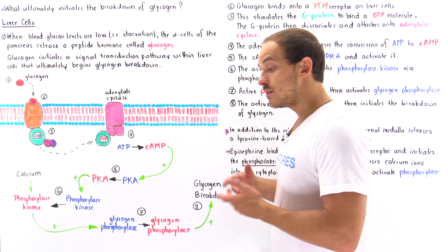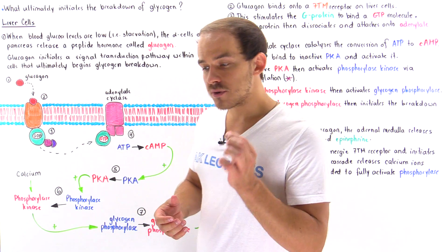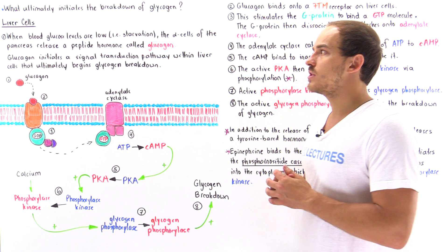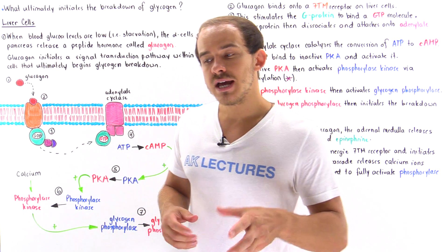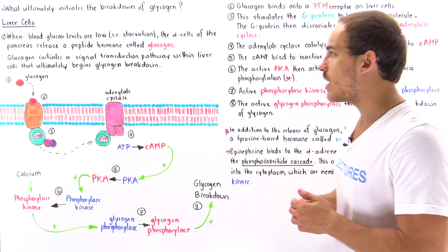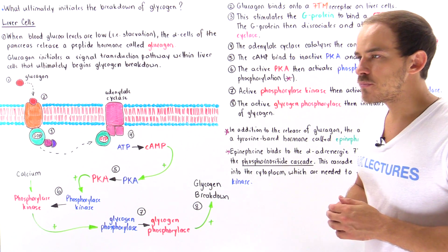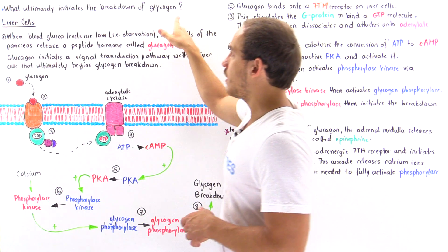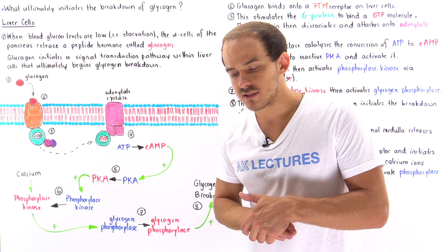On the other hand, liver cells are responsible for maintaining and regulating the proper blood glucose levels in our body. When liver cells break down glycogen into glucose, they can release that glucose into the blood, helping our body maintain the correct level of glucose in our cardiovascular system. In this lecture, we will discuss what ultimately is the signal that initiates the breakdown of glycogen in our liver cells as well as in our skeletal muscle cells.